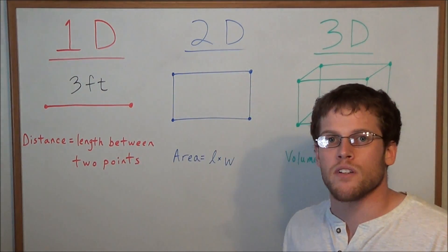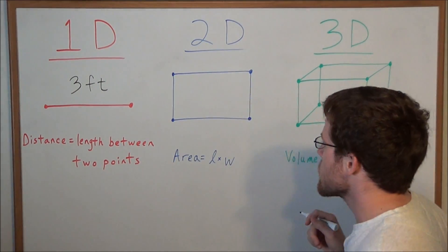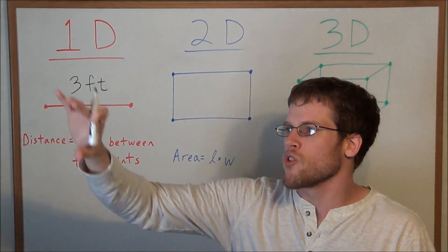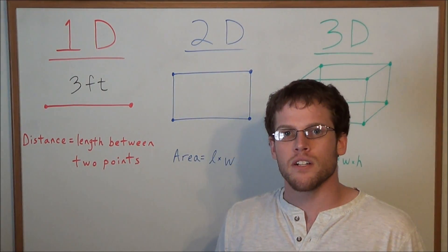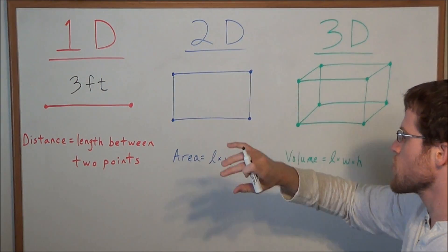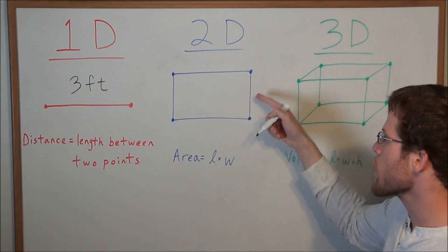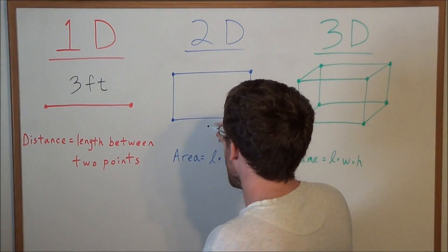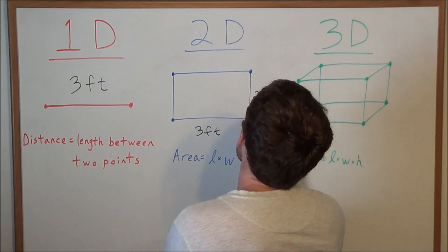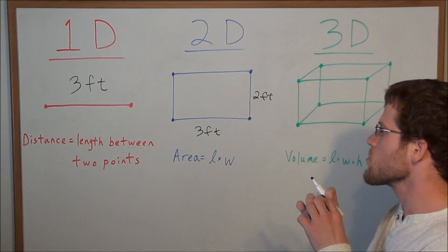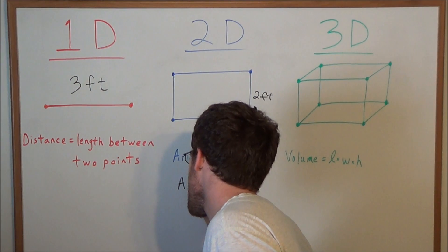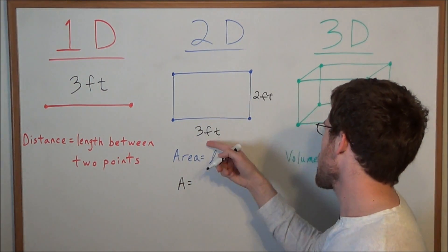Distance is a one-dimensional measurement that we measure with straight lines. Now we move over to area. Area would tell you how much paint you would need to cover a wall. In some sense, area tells you how many little squares we need to cover a flat two-dimensional surface. If we look at an example with the area of a rectangle, let's say we had a three-foot by two-foot rectangle. We use the equation for area: area equals length times width.